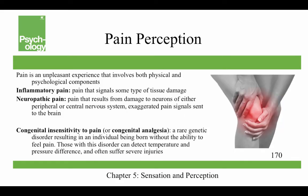Pain perception is an unpleasant experience involving both physical and psychological components. Pain can be considered inflammatory or neuropathic in nature. Inflammatory pain signals some type of tissue damage. Neuropathic pain results from damage to neurons of either the peripheral or central nervous system, sometimes involving exaggerated pain signals sent to the brain. Some people are born without the ability to feel pain — congenital insensitivity to pain or congenital analgesia — a rare genetic disorder.